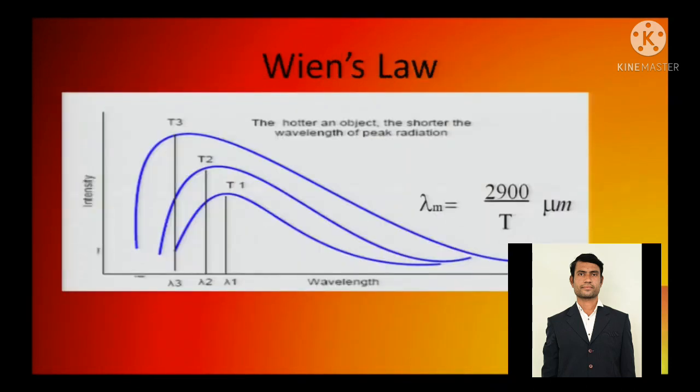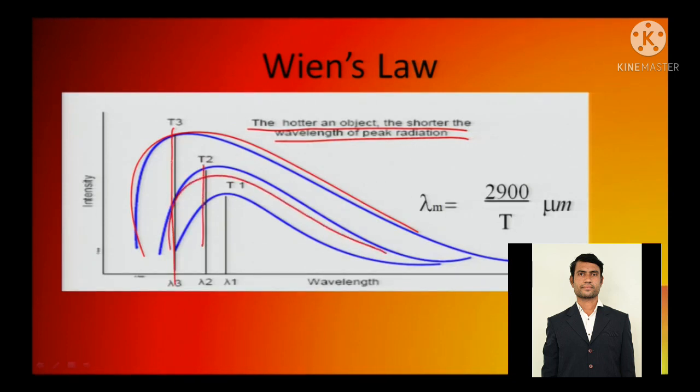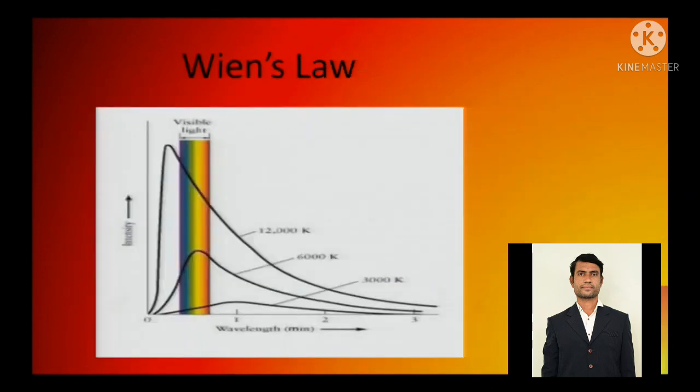Now Wien's law - very important law. Wien's law says the hotter the object, the shorter the wavelength of the peak radiation. You can see T3 is hotter, so it has got shorter wavelength. T2 is less hotter, so it has got longer wavelength. Wavelength is actually increasing. So this is basically Wien's law. The peak wavelength is 2900 by T micrometers. See the wavelength is actually shifting towards the shorter side when the values are increasing. The values are actually doubled.